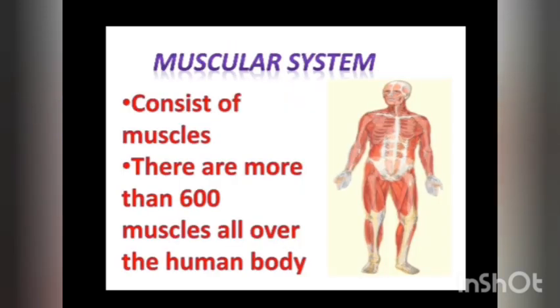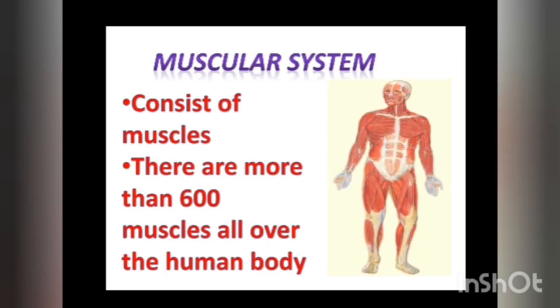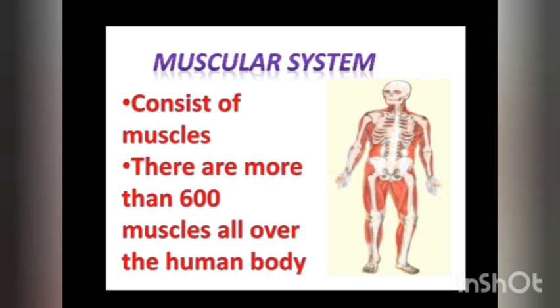The muscular system consists of muscles. Muscles are made up of muscle cells, and these cells contract and relax. There are more than 600 muscles all over the human body, and out of these, 150 muscles are present in our head and neck.